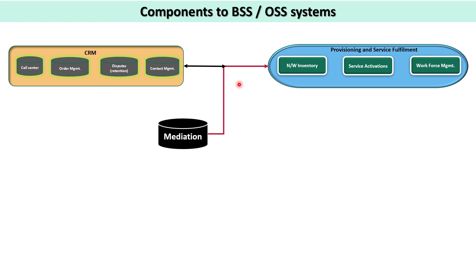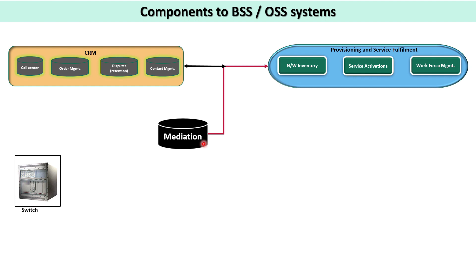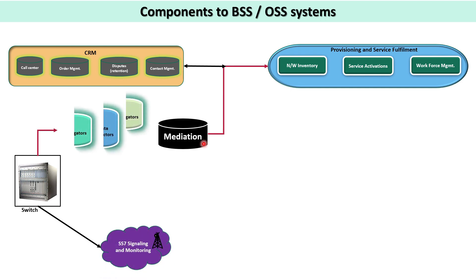In between there is a mediation system, which is called the heart of the telecom industry. It is called so because this mediation system is connected to different support systems as well as network operating systems. Whatever data gets generated in your support system or network-related elements, everything comes into mediation for processing. Different logics are associated in the mediation system which, after bifurcation of the CDRs, gets rated or converted into a readable format for rating or billing.